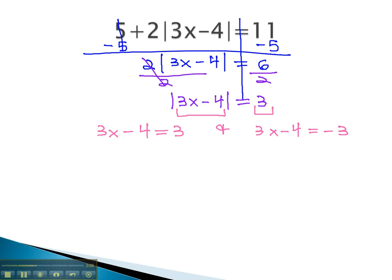We solve both of these like a regular two-step equation. Adding 4 to both sides begins the first equation. We now have 3x equals 7. Finally, get the x alone by dividing both sides by 3. And x is equal to the fraction 7-thirds.